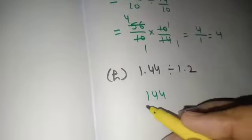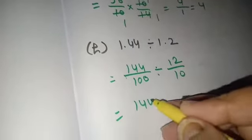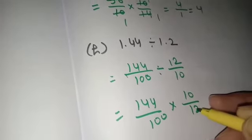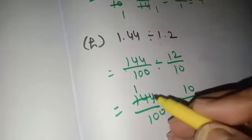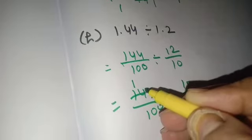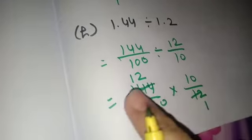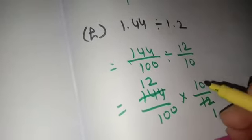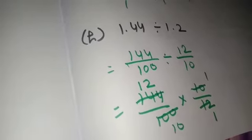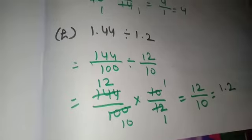In H part, the same thing which we have discussed in F part will come here. 144 by 100 divides 12 by 10. 144 by 100 multiplied 10 by 12. Apply the table of 12. When I cancel, 12 ones are 12. Out of 144, 12 has been taken, 2 is left. 2 will come before 4, the number will be 24, and it will go into 12 twice. Then 10 ones are 10, tens are 100. Again denominator is left, so write 12 by 10. If I want to convert it to decimal it will be 1.2. This is the answer.